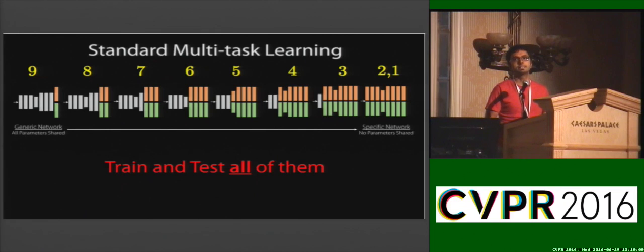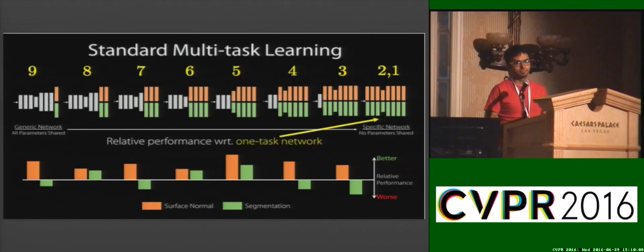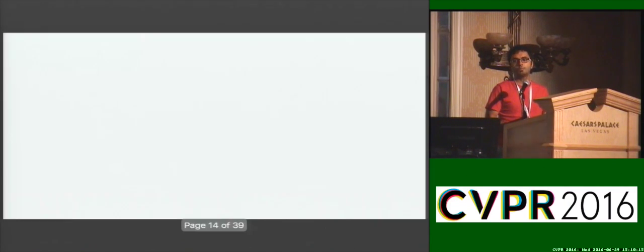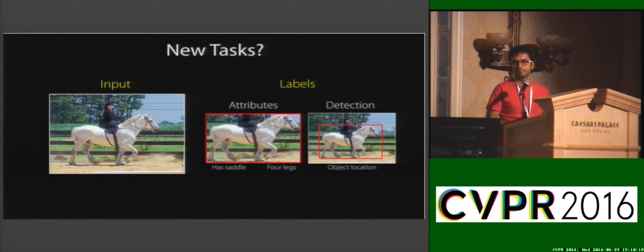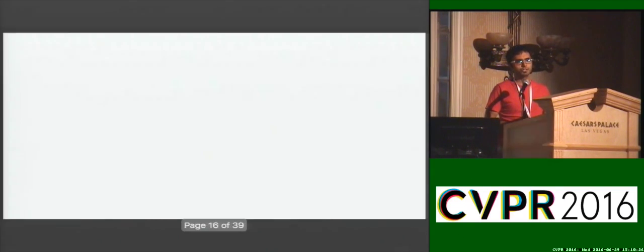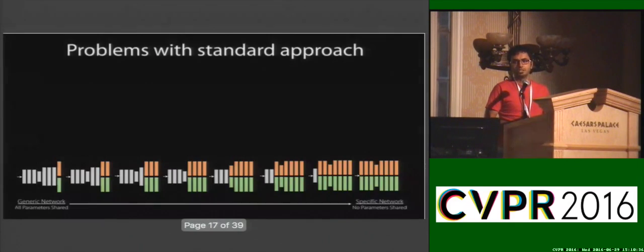So let's do this for the tasks of normals and segmentation. We train and test all of these nine architectures and plot the relative performance with respect to the one-task network. We notice that a single network improves performance for both these tasks. How about two new tasks, attributes and detection? We notice, again, by training all these nine network architectures and plotting their relative performance, that unfortunately the best networks for detection and attributes are different. In fact, no single network improves performance for both these tasks.